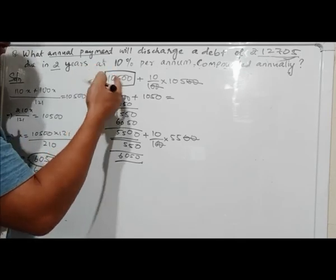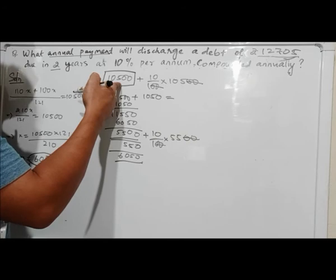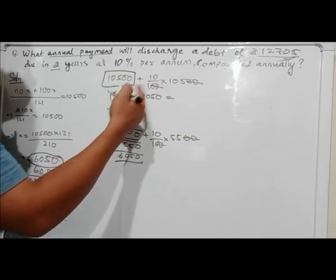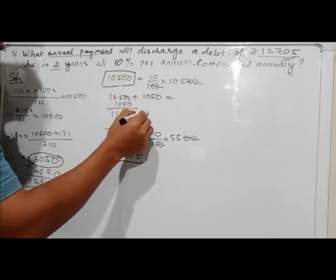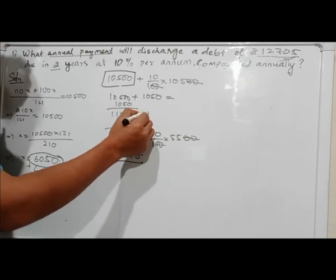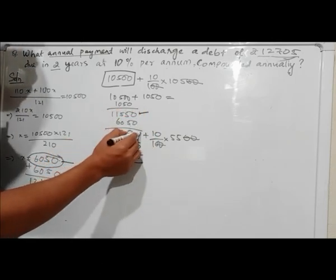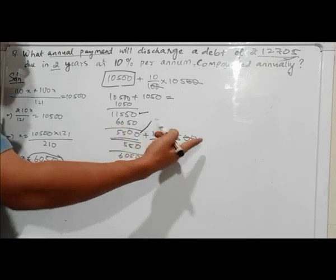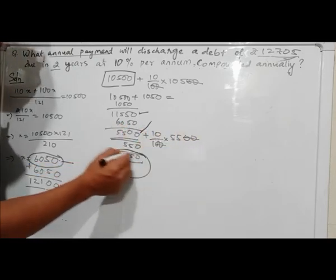At 10% per annum, the installments are calculated. The installment amount is worked out based on the compounded interest for each payment period.